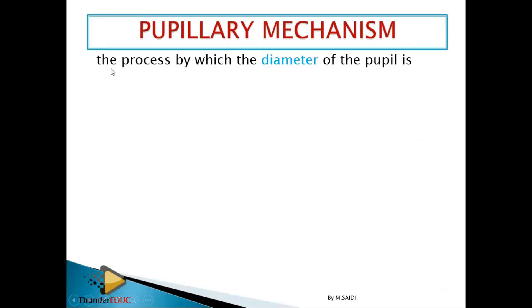When you talk about pupillary mechanism, it's the process by which the diameter of the pupil is being changed. Students tend to misunderstand the pupillary mechanism and accommodation. In accommodation, you have to talk about the lens, the suspensory ligament, and the ciliary muscles. While in pupillary mechanism, you talk about the muscles in the iris and also the pupil.